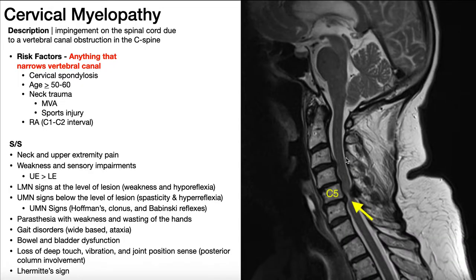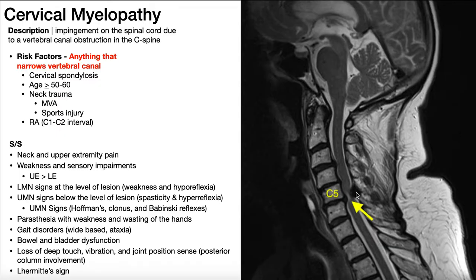Here we're looking at an MRI — this is a sagittal view. We can see the pons up here, here's the medulla, and then down here is the spinal cord. We see right here there's a black structure — something is taking up space where it shouldn't be — and we see that thinning of the spinal cord because whatever this is is compressing it. The vertebral bodies are anterior on the left side of the picture, and this is more posterior on the right. Most likely this is hypertrophy or ossification of the ligamentum flavum, producing compression on the spinal cord really between C5 and C6.